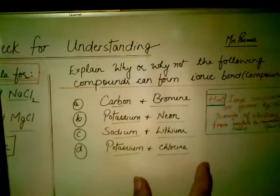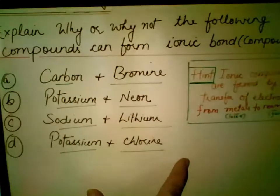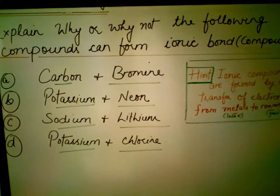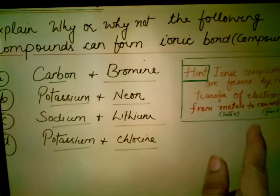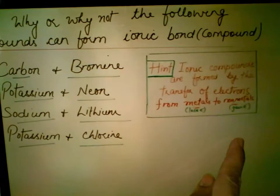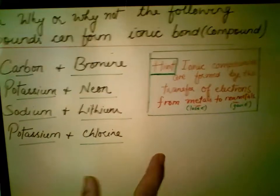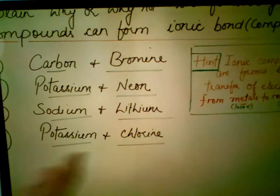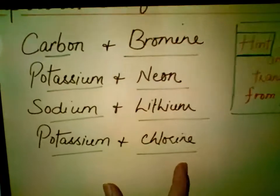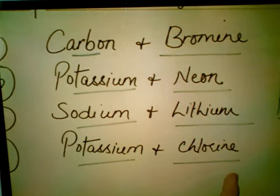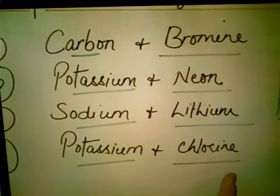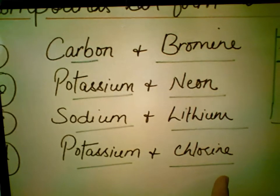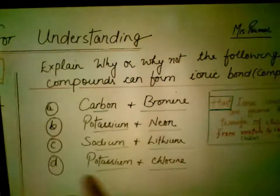Next question: Explain why or why not the following compounds can form ionic compounds. Since ionic compounds form by transfer of electrons from metals to non-metals, you need to look at each pair and identify which element is the metal losing electrons and which is the non-metal gaining electrons. Look at the periodic table, determine which combinations can form an ionic compound and which cannot — and be ready to explain why.